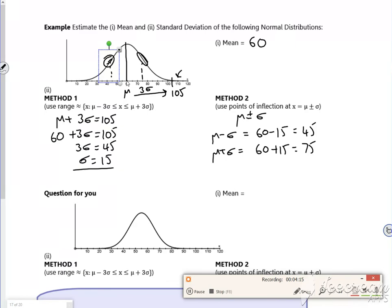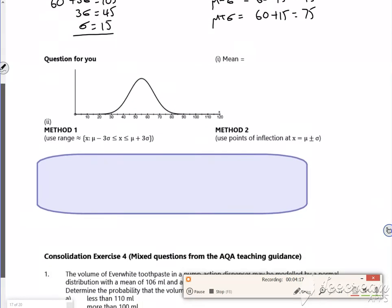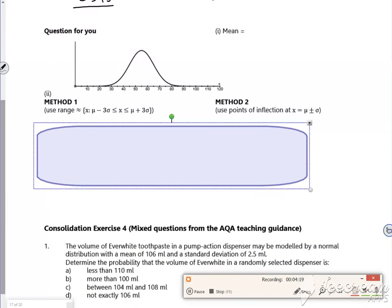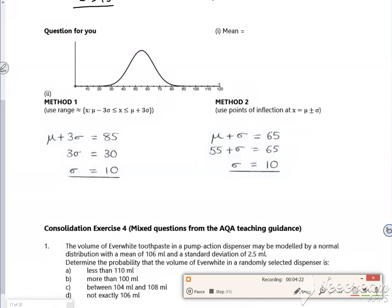It's not very good, is it? It's all made up. There's one for you. So, they've just looked at it and thought, all right, so, my mean is, what, 55?